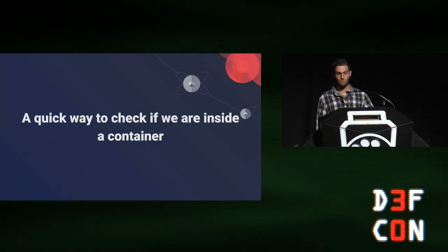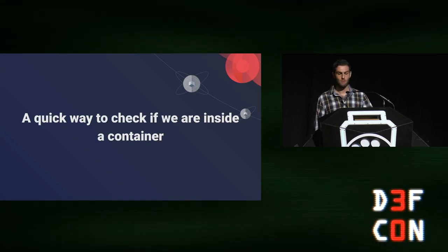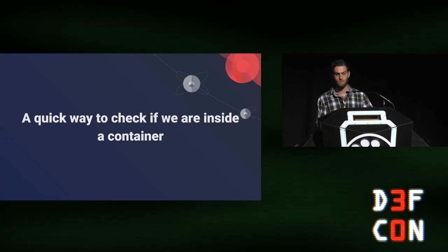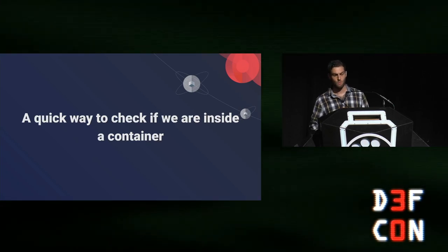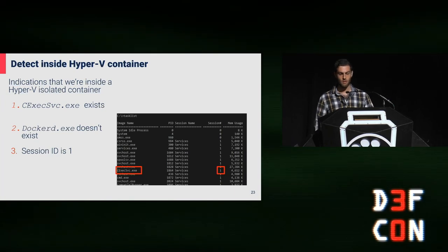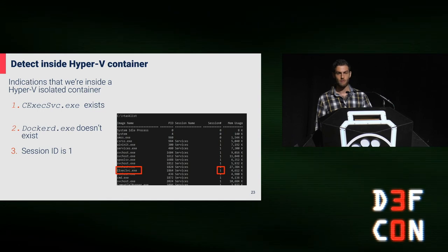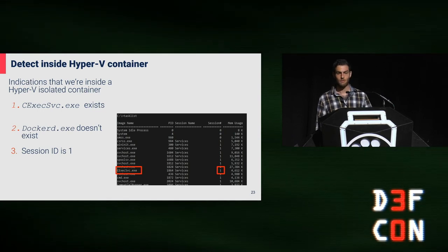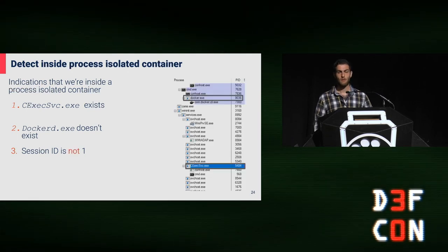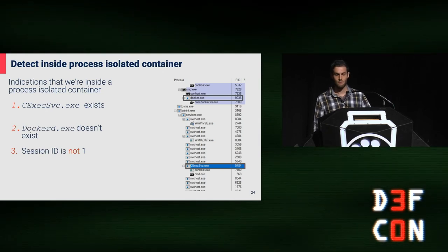Before we try to break out of the container, we need to know if we are running inside of it. Using a single task list command, I'll show you how to detect if we are running inside a container and which isolation method we are using. It is possible to detect a Hyper-V container by listing all processes and checking if the process CExecSvc exists, docker-d must not exist on the task list, and CExecSvc must run from session one. For process isolated containers, all the same conditions apply except the session ID of CExecSvc must not be one.